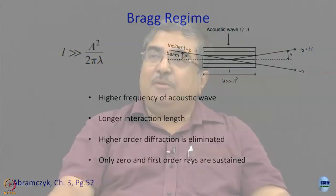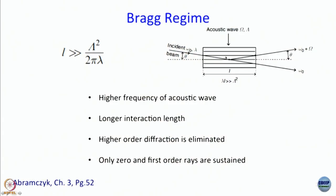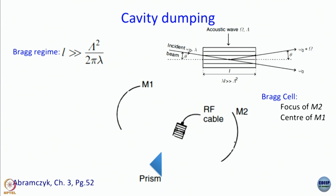When light falls on the Bragg cell, part of it goes straight undeflected and does not interact with the medium; part of it gets diffracted and gets frequency-modulated by capital omega. Now, in cavity dumping we use an acoustic optic modulator placed inside a laser cavity. This is a part of the laser cavity we are showing. It is important to remember that there is no output coupler here — all mirrors are highly reflecting. This is M1, this is M2, and the laser beam travels between them.